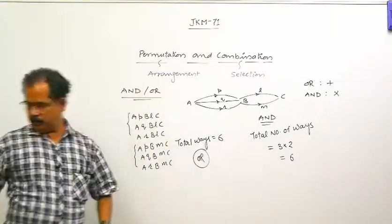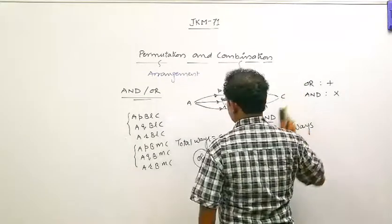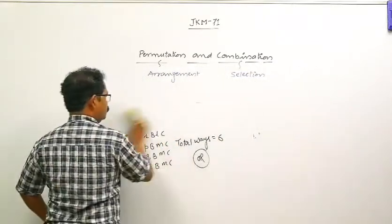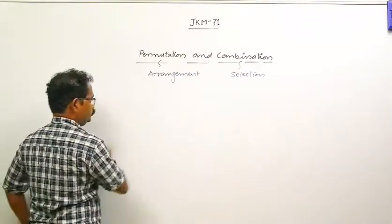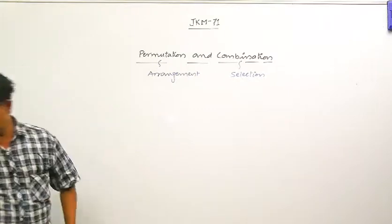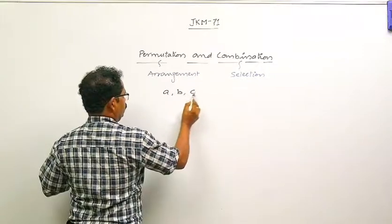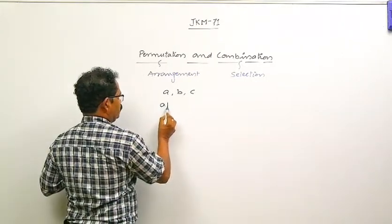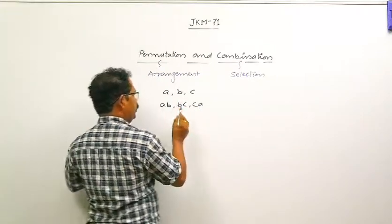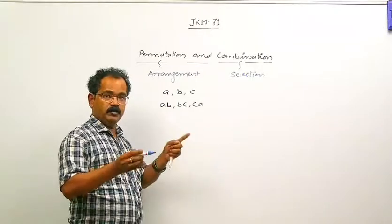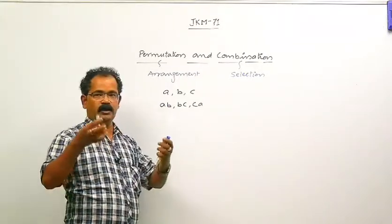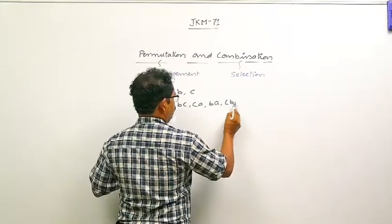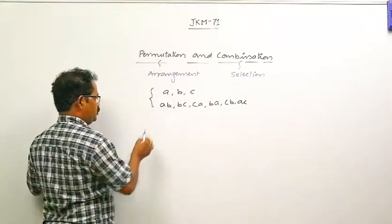अब Permutation के formula NPR के बारे में पढ़ते हैं। मान लो ABC तीन alphabets हैं, कहा जाए कि किन्हीं दो को arrange करो। तो arrangements होंगे: AB, BA, AC, CA, BC, CB - total 6। यह 3P2 है। अब ABCD चार alphabets लें, दो को arrange करें: AB, BA, AC, CA, AD, DA, BC, CB, BD, DB, CD, DC - total 12 आए। यह 4P2 है।